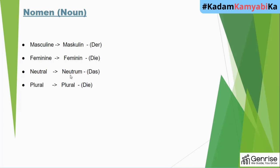Neutral is called 'Neutrum' and is referred to as 'das'. Plural has the same spelling as feminine but a different pronunciation, and it is also referred to as 'die'. So 'der', 'die', 'das', and 'die' are all called articles, which denote the gender of the noun.